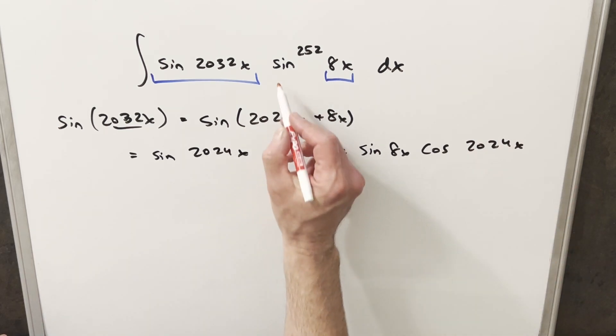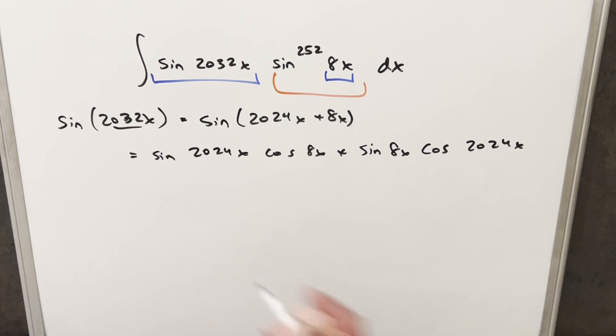And then I want to just take this and put it back in the integral, but I need to distribute in this other term. So let's see what happens when I do that.